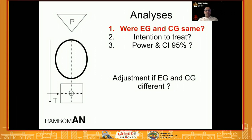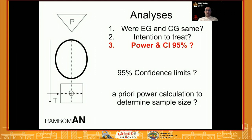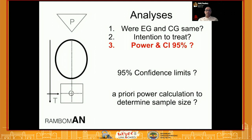The last part of the RAMBO mnemonic is Analysis. First, were the exposure group and control group similar at baseline, even in a randomized trial? Second is intention-to-treat analysis: irrespective of any crossover, people assigned to one group must be analyzed with respect to that group. You cannot analyze patients in an as-treated fashion, as this represents a lower level of evidence and increases bias.